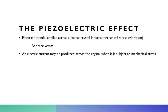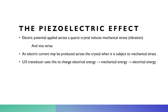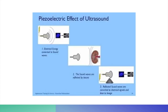Ultrasound machines use this principle in order to function. The ultrasound transducer uses the change from electrical energy to mechanical energy and moves that back into electrical energy, and this graph shows us a little bit more about that. As you can see in picture number one, electrical energy is being converted by the transducer to sound waves.